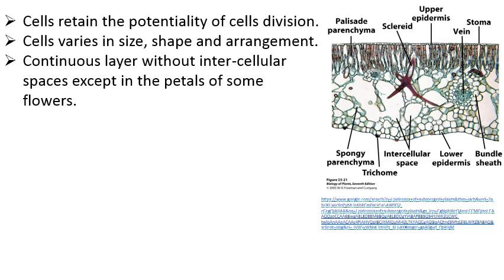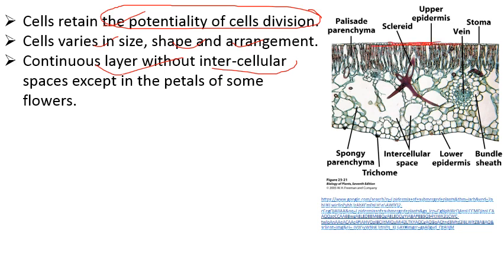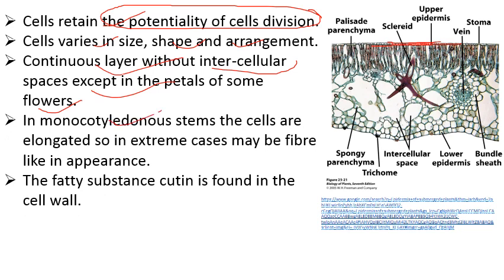In some cases, epidermal cells retain the potentiality of cell division. Epidermal cells vary in shape, size, and arrangement — it is not uniform across plants. The epidermis is a continuous layer without intercellular spaces, except in petals of some flowers. In monocotyledon stems, epidermal cells are elongated, and in extreme dry conditions they may look like fibers.